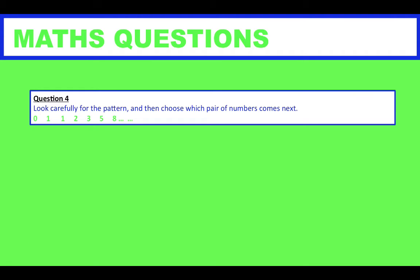So you've got 0, 1, 1, 2, 3, 5, 8. So which two numbers come next in the sequence?